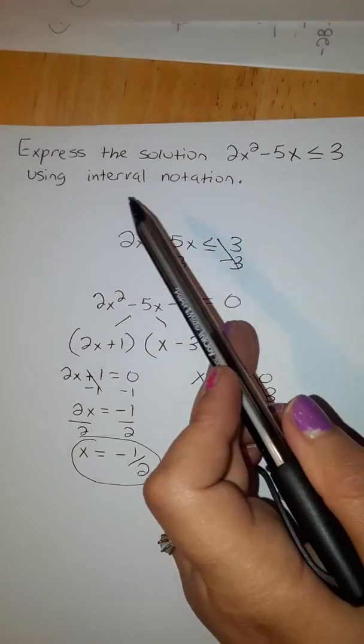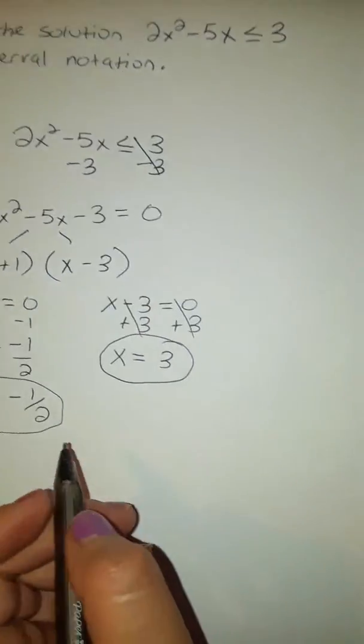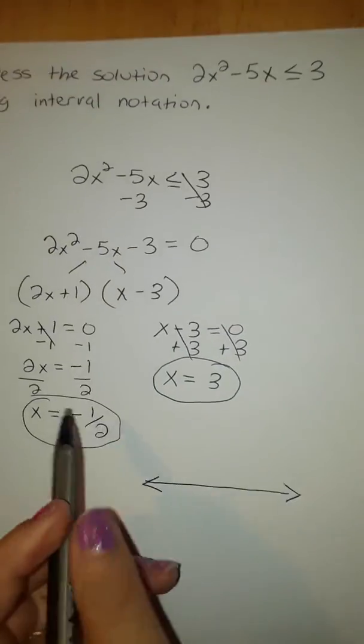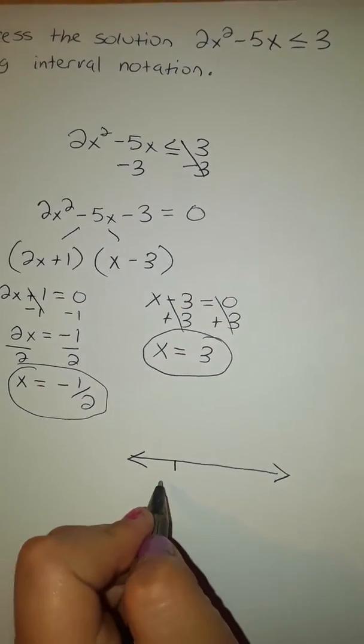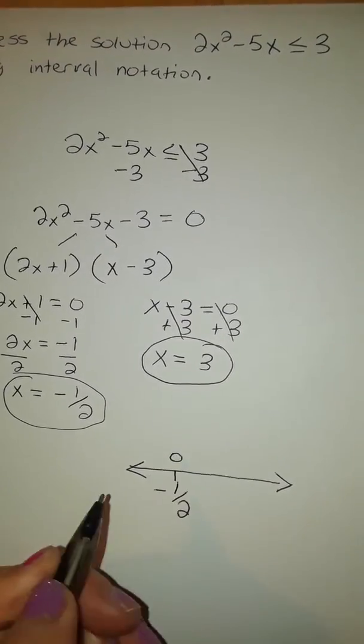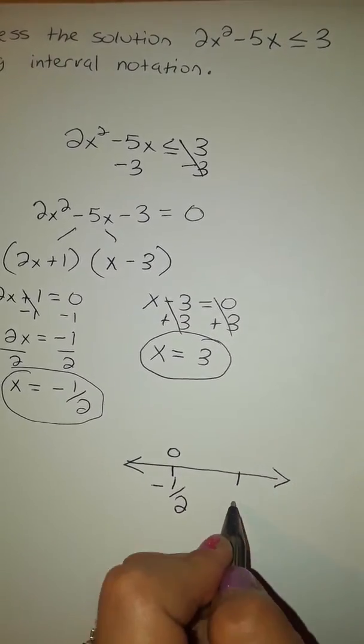So we're going to draw a line and we're going to put these two solutions on this line. Negative 1 half, I'm going to put a 0 here because it's included, and a 3.